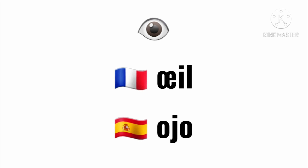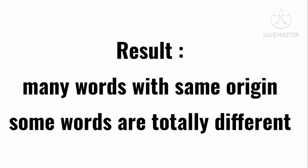The last word is 'eye' — in French it's 'œil' and in Spanish it's 'ojo'. As a result, we can see that there are many words with the same origin, but of course there are also some words which are totally different. You can see that those two languages are related to each other.